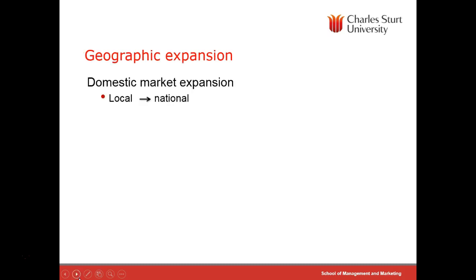Geographic market extension is probably the most obvious — moving from local to national levels. A classic type of strategy often used in the service industries is franchising.